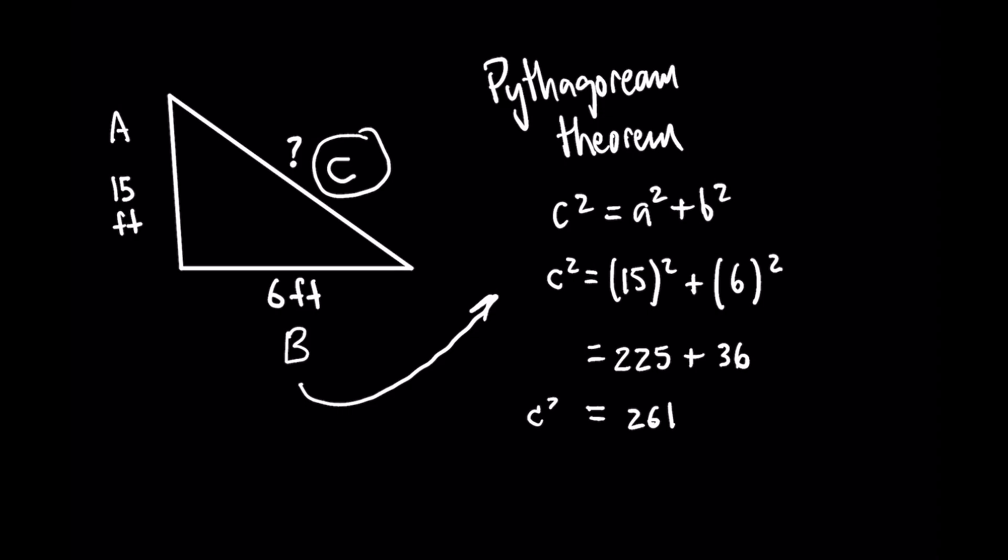But if you look at your equation again, remember that this is the value for c squared. And we actually want to find out what the value for c is. So we have to get rid of that power to the second power, and the way that we do that is by taking the square root.